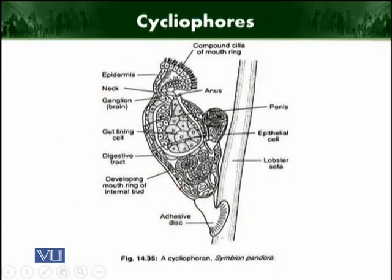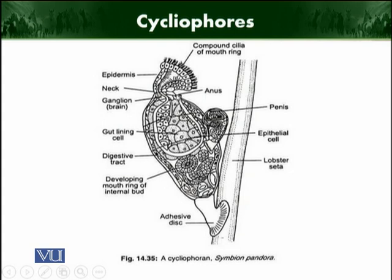Here is a diagram showing the different features of Cycliophora that we discussed. You can see the epidermis, compound cilia of the mouth ring, neck, ganglion (the brain), gut lining cilia, digestive tract, developing mouth ring of the internal bud, and the adhesive disc. Through the adhesive disc, the organism attaches to the lobster setae. Also visible are the epithelial cells and the anus.